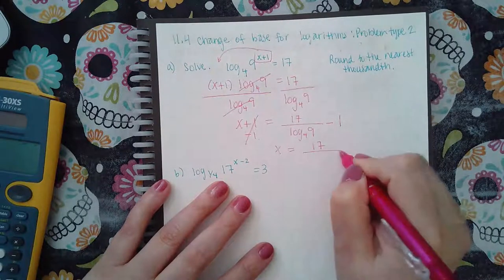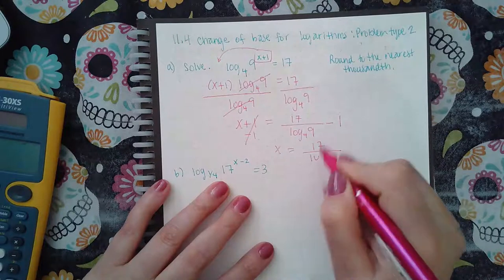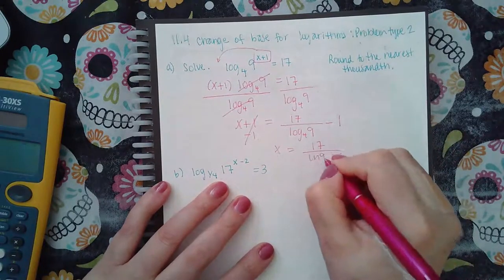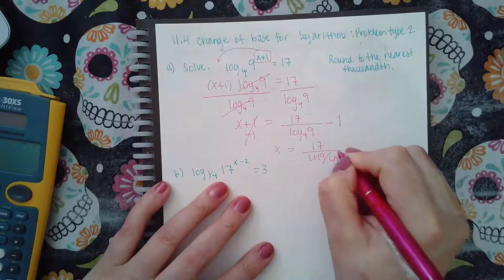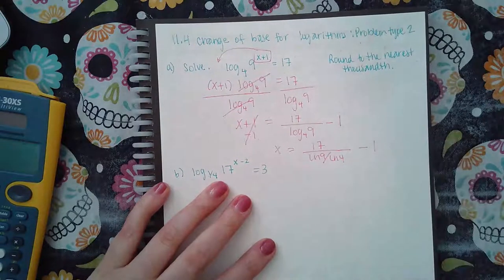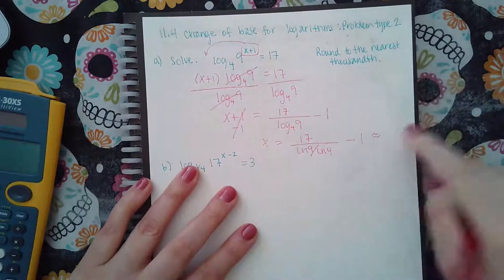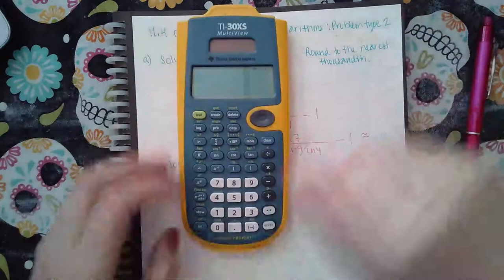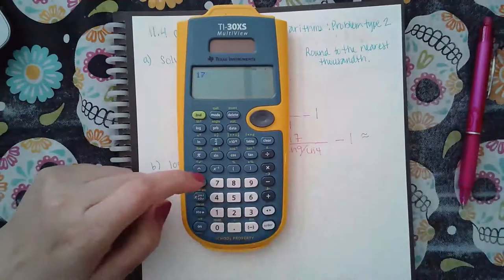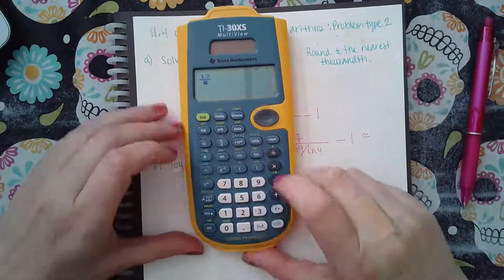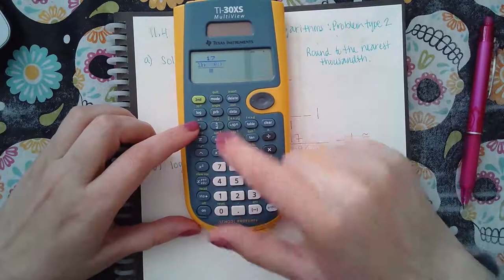Now remember, I can't type this in the calculator the way it is, so I would have to do LN of 9 over LN of 4, and then the minus 1. So what I want to do is type in this whole thing and then round my answer to the nearest thousandth.